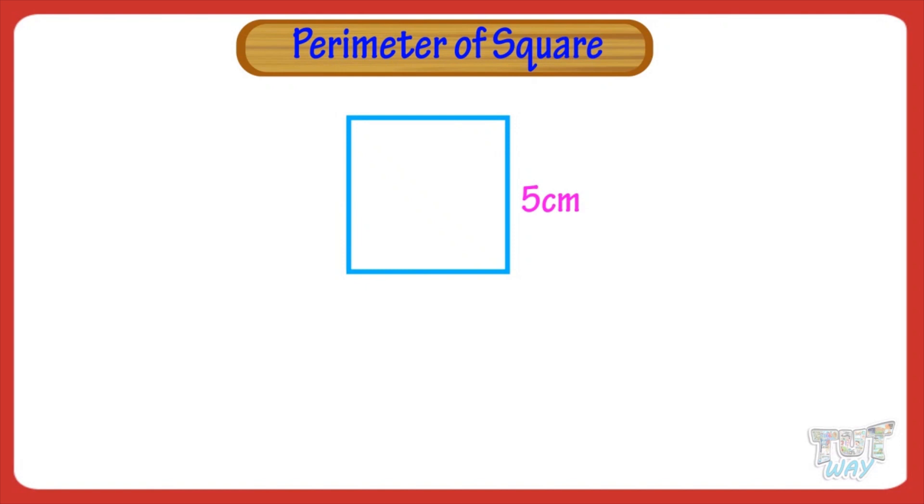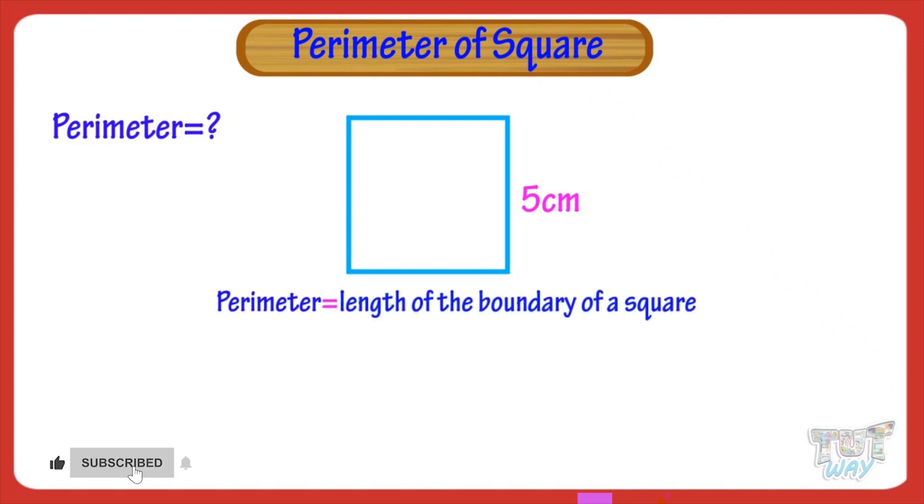We have to find its perimeter, that is, the length of the boundary of the square. If the side is given, we can find the perimeter using the formula.